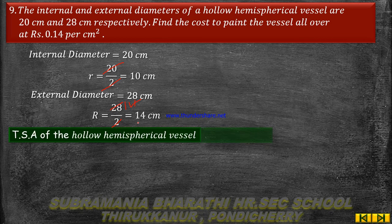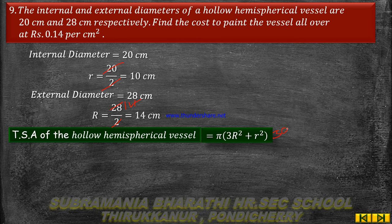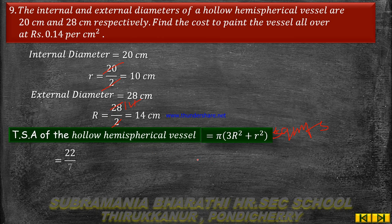Now, the total surface area of a hollow hemispherical vessel is equal to π into (3R² + r²) square units. Substituting the values: π is equal to 22 by 7, R is 14, r is 10. So we have 22/7 into (3 × 14² + 10²).